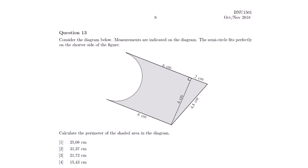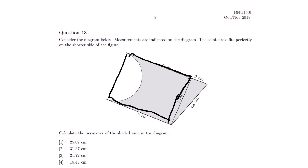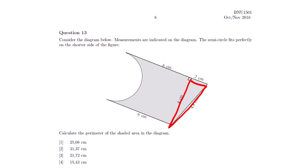This question is based on measurements, or we can say shapes. The question says: consider the diagram below — measurements are indicated on the diagram. The semicircle fits perfectly on the shorter side of the figure. If we construct this, we would have a full circle, but since we have half of it, we call it a semicircle. Looking at the other shapes, we can see a rectangle, and the last shape is a triangle.